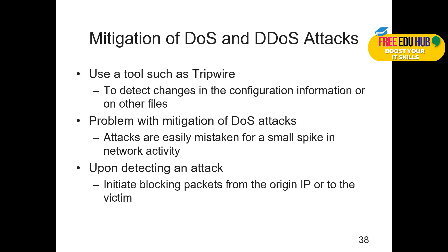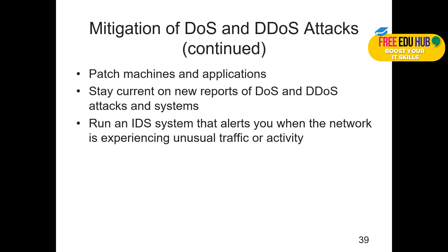Problems with mitigation of DDoS attacks: attacks are easily mistaken for a small spike in network activity. Upon detecting an attack, initiate blocking packets from the origin IP to the victim. If there are constantly large numbers of packets flowing from an originator to a victim with half-open connections, you can detect it as a DDoS attack. Patch machines and applications — not only the operating system but also applications such as HR or payroll software. Stay current with new reports of DoS and DDoS attacks and run an intrusion detection system that alerts you when a network is experiencing unusual traffic or activity.